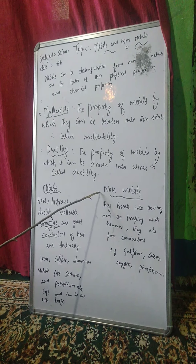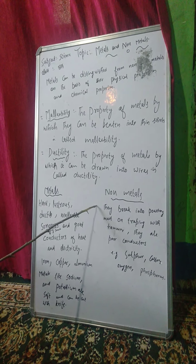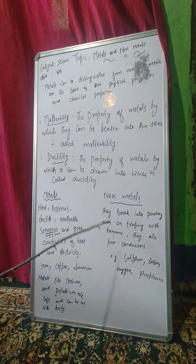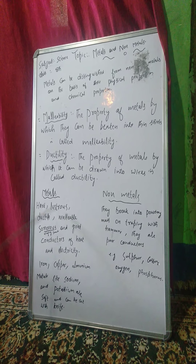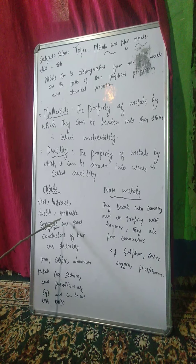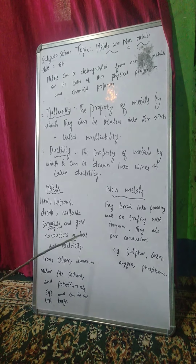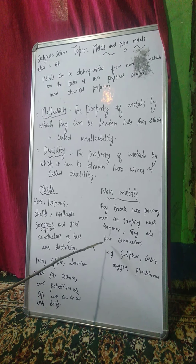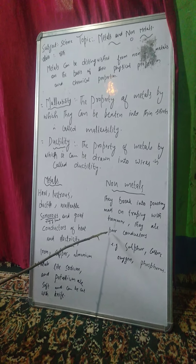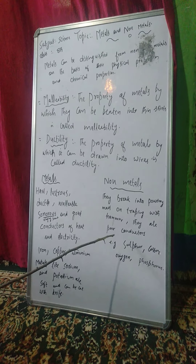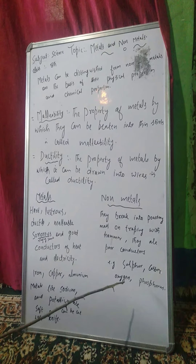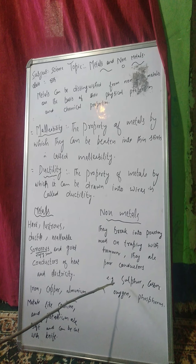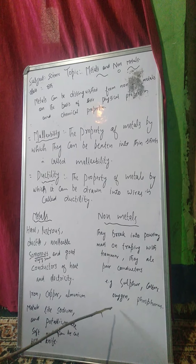Ab hum chalenge non-metals ki taraf. Non-metals joh hota hai — agar hum unko beat karengi hammer se, they break into powder. Agar hum non-metal ko beat karengi hammer se, woh ek powder ban jayega. Jabke metals ko beat karengi to thin sheet banega. They are poor conductors of heat and electricity. Joh non-metals hootay hain, unmhe electricity aur heat pass nahi hootay — jaise lakdi, sulfur, carbon, oxygen, phosphorus. Inhme agar hum electricity pass karengi to inhme electricity aur heat pass nahi hoongi. Kyunki joh non-metals hai, they are bad conductors or poor conductors of electricity.